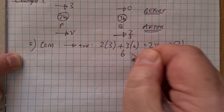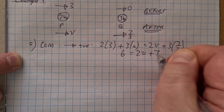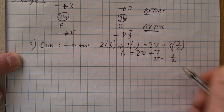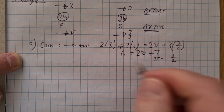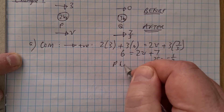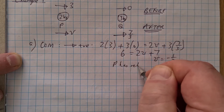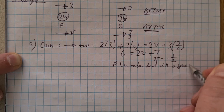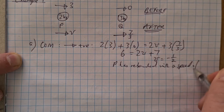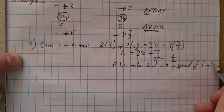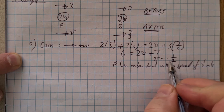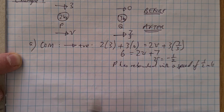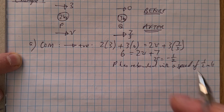So we have 6 = 2V + 7. Therefore V = −½. So P has rebounded with a speed of half a metre per second, because the negative sign shows it's in the opposite direction to what we stated in our diagram.